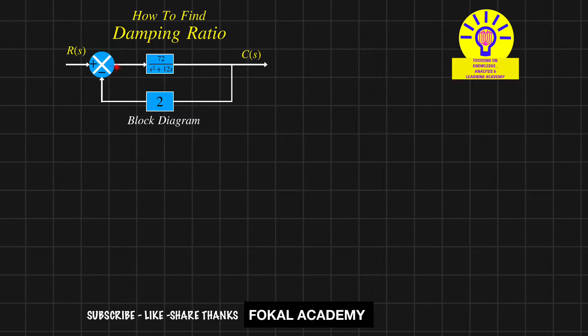At the summing point, the forward gain is given as 72/(s² + 2s), and the feedback gain is given as 2. This is negative feedback.